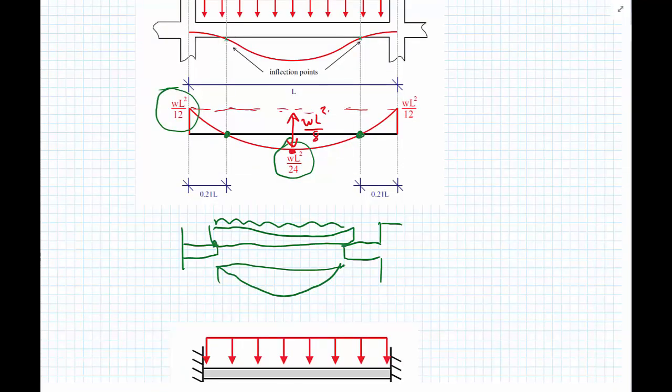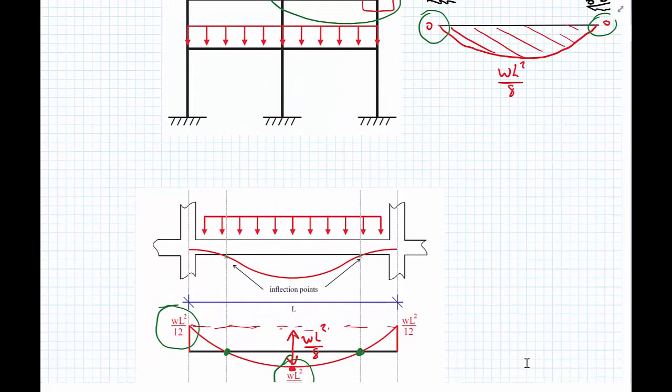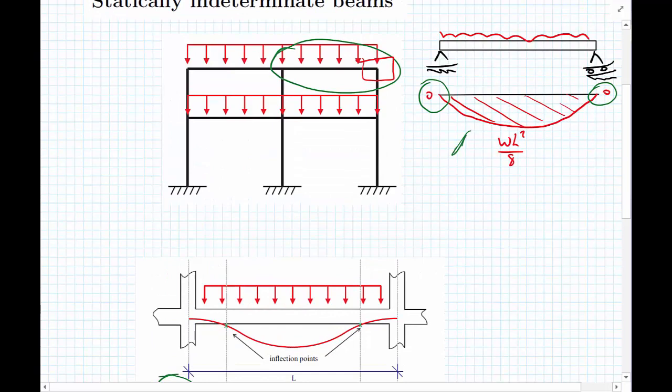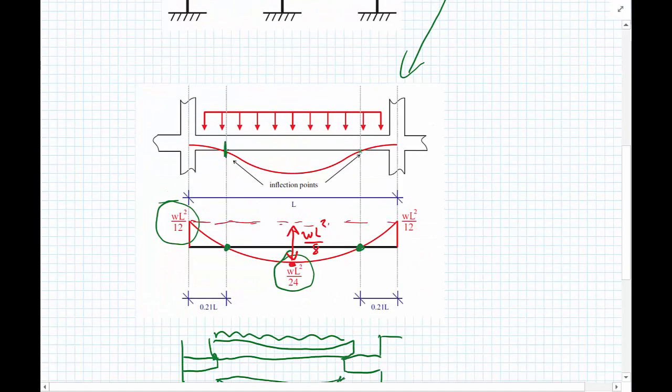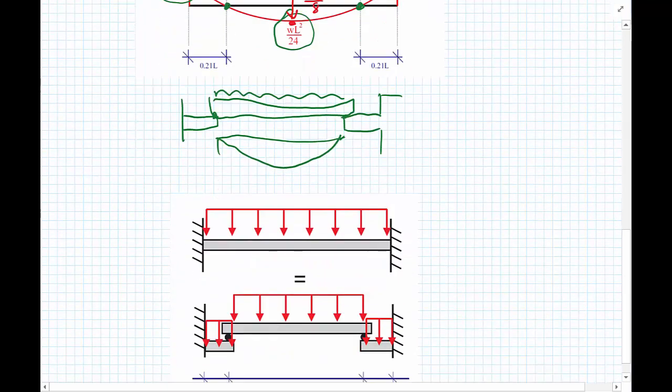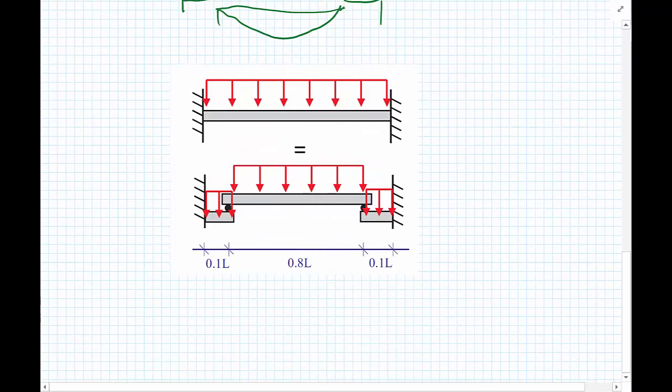So a better approximation we could make is somewhere nicely in between completely simply supported and completely fixed. Simply supported, the inflection point is at the edges. The inflection point for fully fixed is 0.21 of the span. So let's go halfway. Let's take our inflection point to be halfway between simply supported and fully fixed. Therefore we'll take our inflection point at 0.1 times L. As we've got a symmetric configuration, we have 0.1 times L at both ends, leaving us with a simply supported span in the middle of 0.8L.